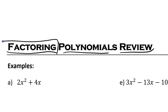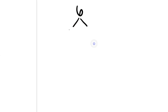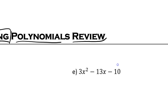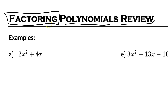Factoring means breaking down some number or some expression into things that multiply. For example, the factors of 6 are 1 and 6, or 2 and 3, because 2 times 3 is 6 and 1 times 6 is 6 as well. So what we're doing is just breaking it down into smaller expressions that are multiplied.